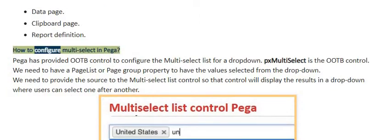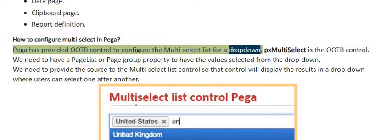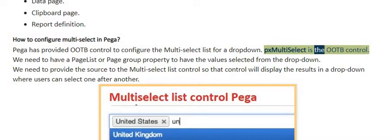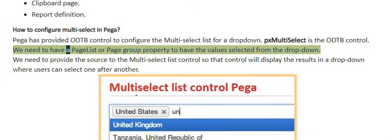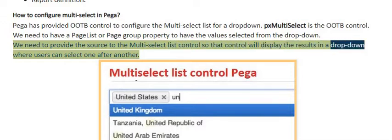To configure multi-select in PEGA, there is an OOTB control called PX multi-select. We need to have a page list or page group property to hold the values selected from the drop-down. We also need to provide a source to the multi-select list control so that the control will display results in a drop-down where users can select one after another.